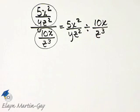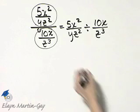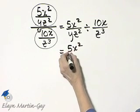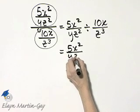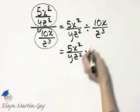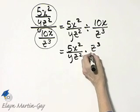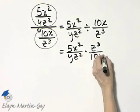And now we'll divide as usual. How do we divide? It is the first rational expression, 5x squared over yz squared times the reciprocal of the second one. So that's z cubed over 10x.